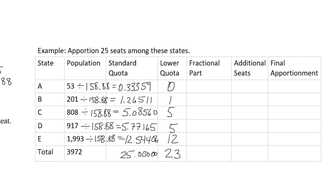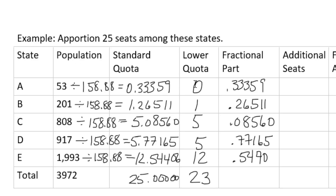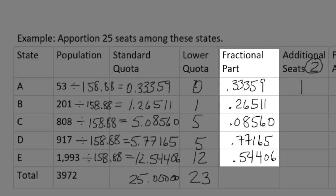The way Hamilton's method deals with that is by identifying the fractional parts of the standard quota. For state A, the standard quota was 0.33359, so 0.33359 is the fractional part. For state B, it was 1.26511, so 0.26511 is the fractional part, and so on. Of the two additional seats left over, we automatically give one to state A because the lower quota gives them nothing and they must have at least one representative. For the remaining extra seat, Hamilton's rule is to give it to the state with the largest fractional part. Here, 0.77165 is the largest, so that state gets the extra seat.